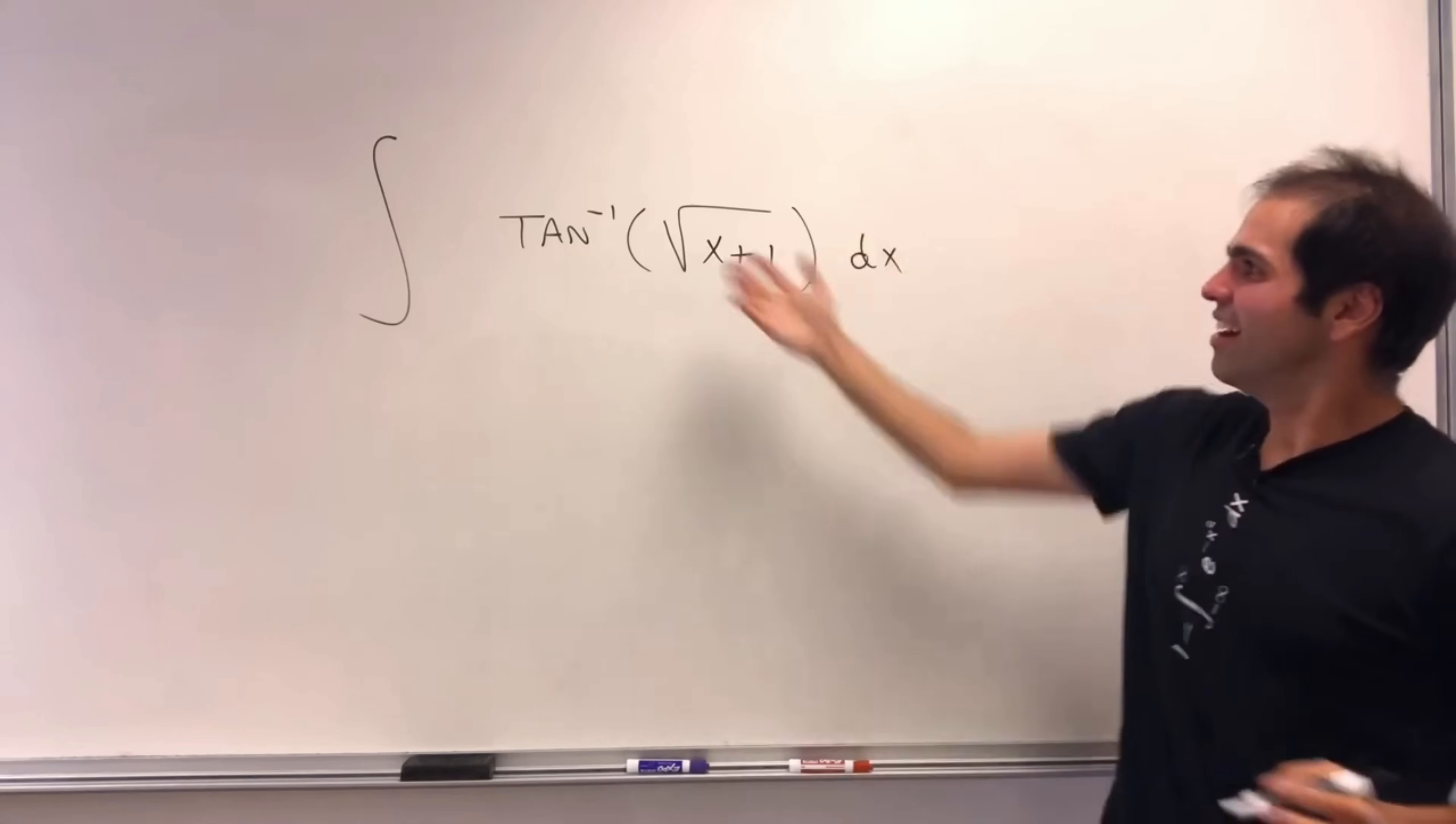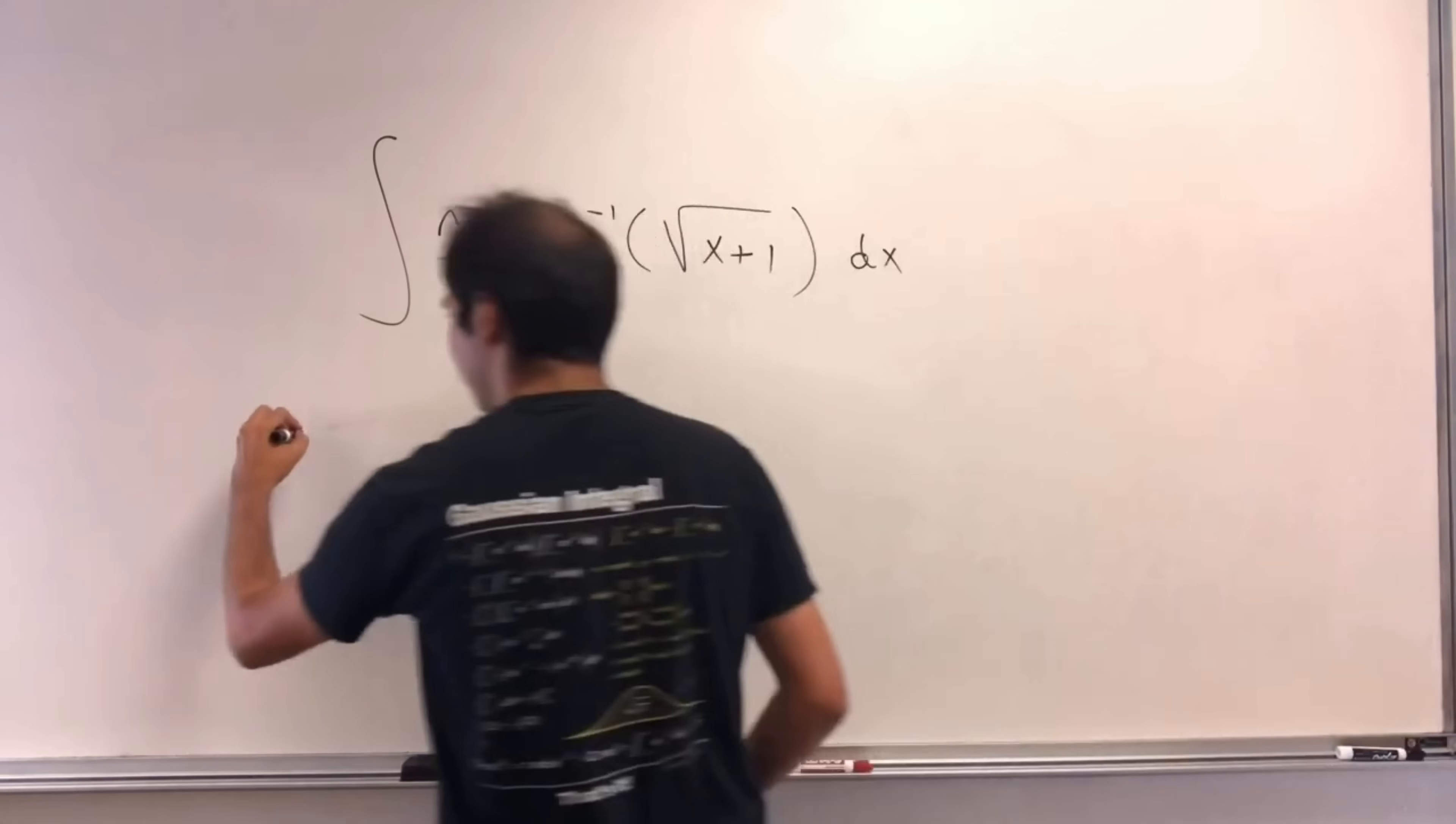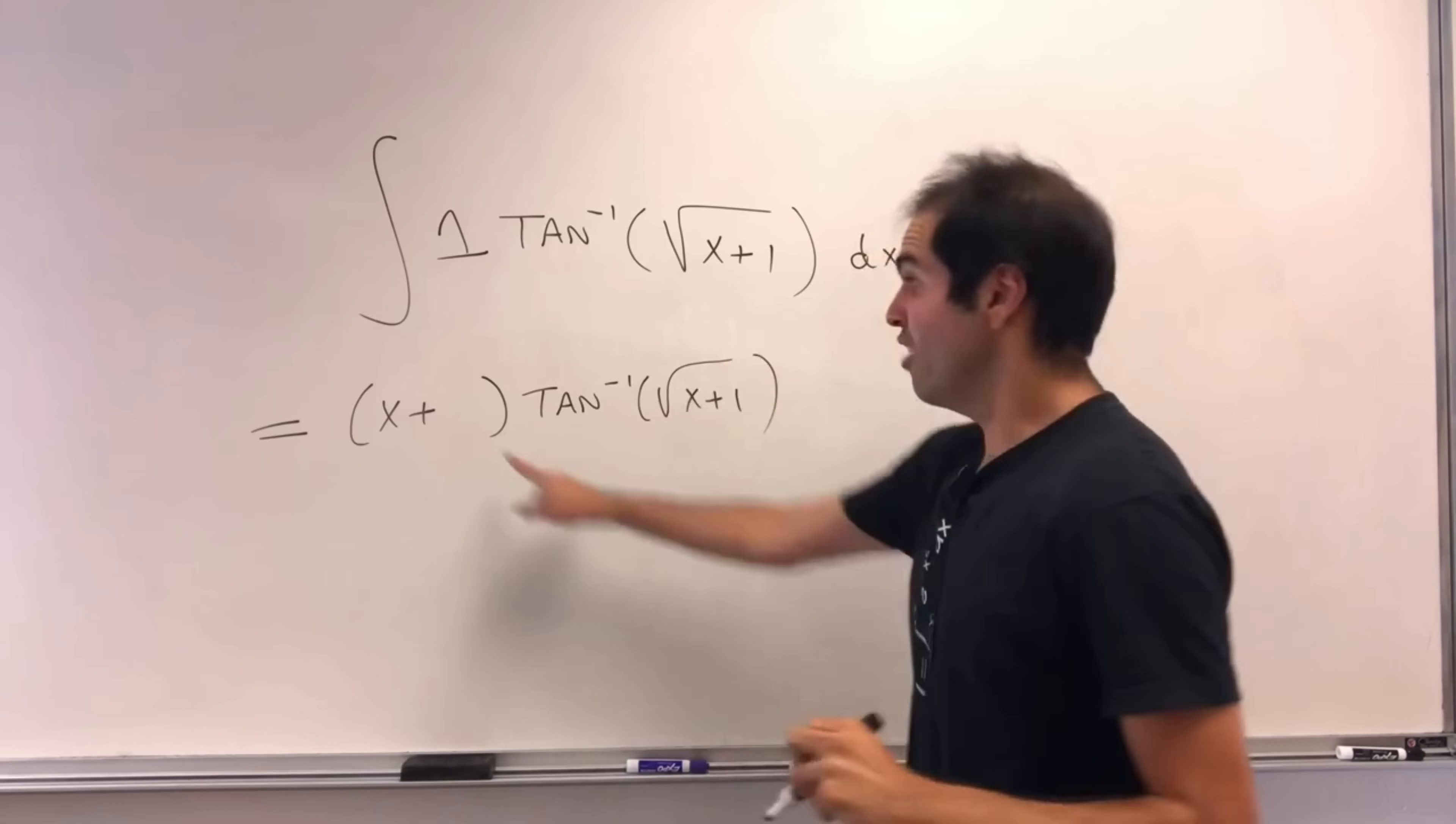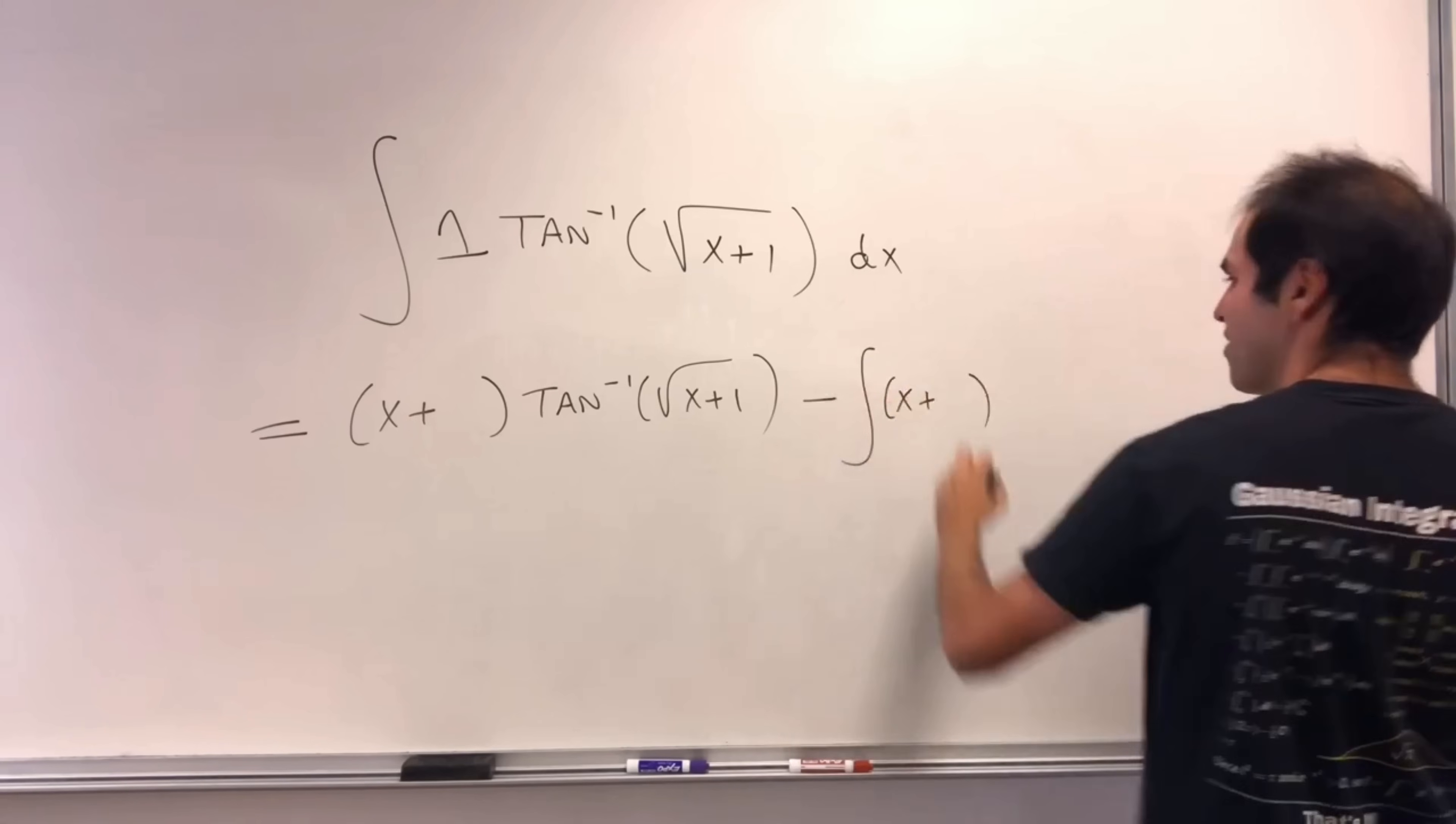The x, okay, and again, same spiel as before. This is 1 times arctangent of square root of x plus 1, and this becomes now x plus something times arctangent of square root of x plus 1, and careful, the answer is not x plus 1, you have to actually have to work a bit harder, minus integral of x plus something.